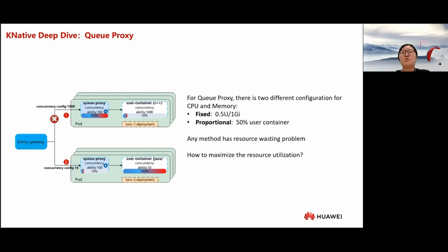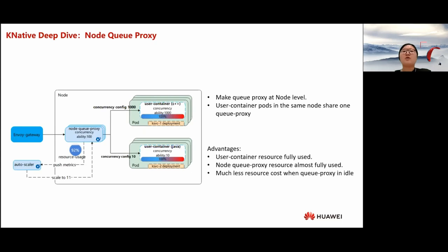In order to fix the problem above, we make Queue-Proxy operate at the node level instead of at the pod level. All user container pods on the same node share that node's Queue-Proxy, as shown in the figure. The node Queue-Proxy asks the Autoscaler to scale based on its resource usage. This method has the following advantages: user container resources can be fully used, node Queue-Proxy resources can also be nearly fully used, and there is much less resource cost when Queue-Proxy is idle. Even if there are many idle instances on the node — meaning pods not processing any requests — there will only be one node Queue-Proxy instance on the node, which can save a lot of resources.